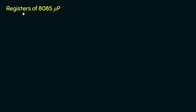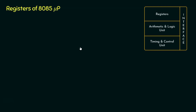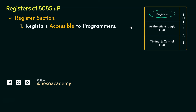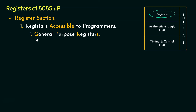When we talk about the registers of the 8085 microprocessor, we are discussing the register section of the 8085 microprocessing unit. The register section is subdivided into two categories. First, we have registers accessible to programmers, which is further categorized into two subdivisions. The first subdivision is the GPRs — general purpose registers — which are individually 8 bits and are named B, C, D, E, H, and L. We have six different GPRs in the 8085.